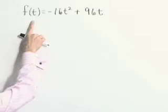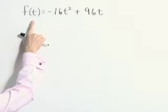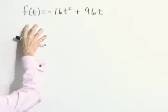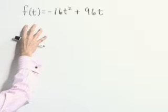So we have our function representing the height of this projected ball. The question is, after how many seconds is that height going to be 128 feet?